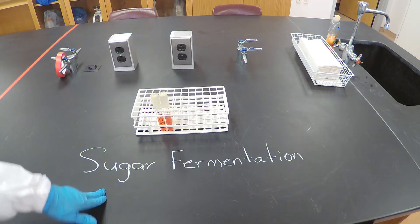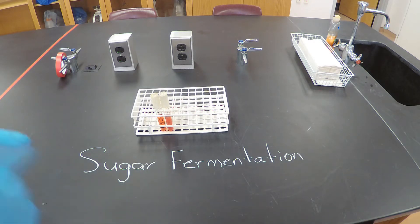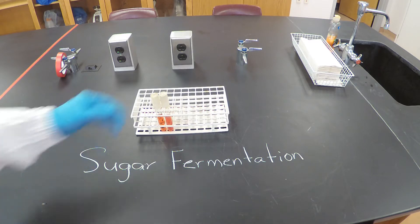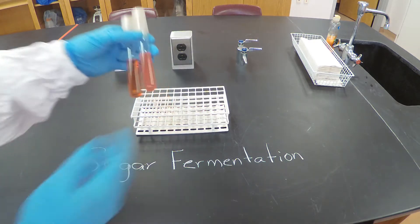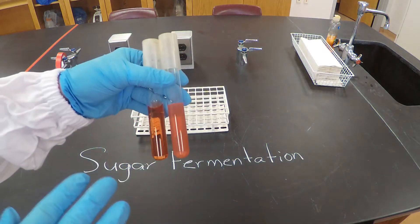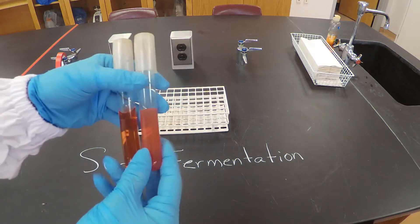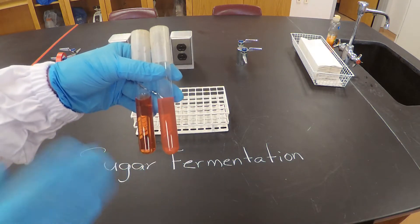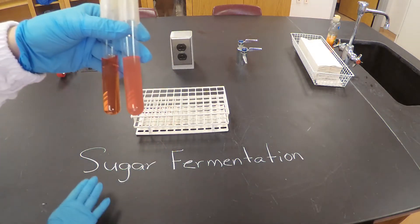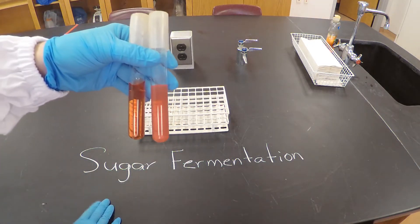The sugar could be anything — it could be glucose, it could be lactose, it could be sorbitol, it could be any kind of sugar that you can think of. In this case, these two tubes both have glucose, so we are checking specifically for glucose.